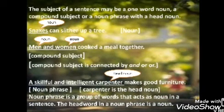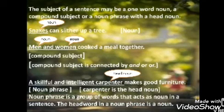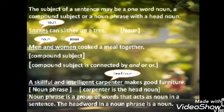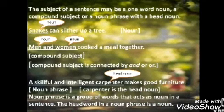The subject of a sentence may be a one-word noun, a compound subject, or a noun phrase with a head noun. Now you will read how the subject of a sentence may be a noun, a compound subject, or a noun phrase with a head noun. Example: 'Snakes can slither up a tree.' Who can slither up a tree? Snakes. So here the subject is 'snakes' and it is a noun.